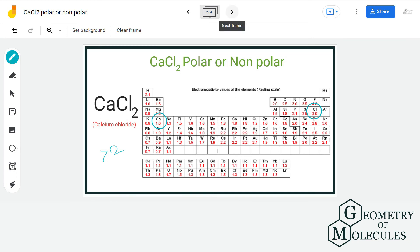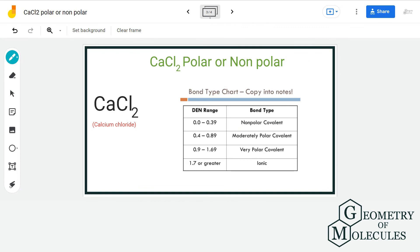We can also refer to this electronegativity difference table for determining the bond type. We got the value of two, that means the bond type in CaCl2 is ionic in nature.